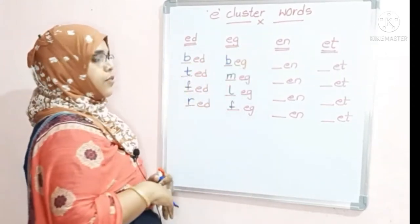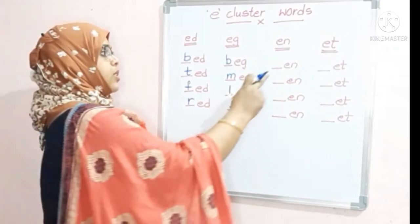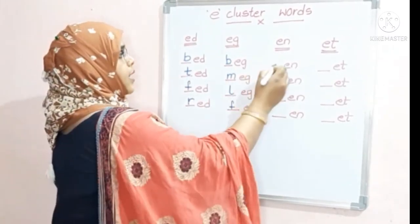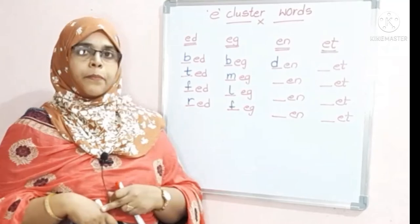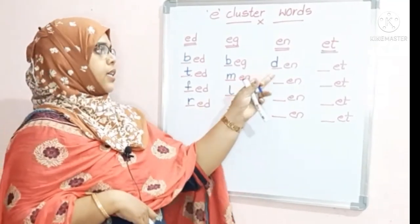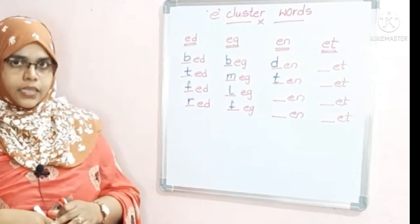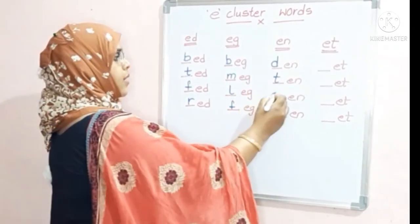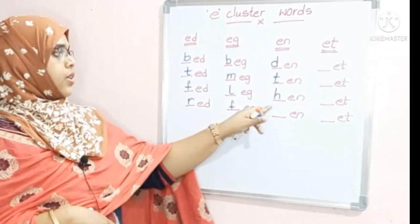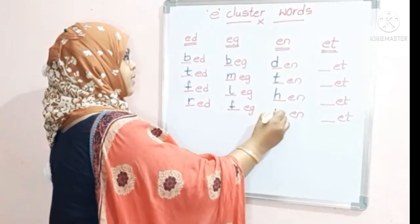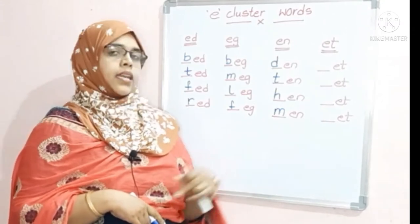The next cluster we have is E-N. To this E-N cluster, if you are adding letter D — the sound of D is D — D + N becomes 'den'. The sound of T is T — T + N becomes 'ten'. This is letter H, the sound of H is H — H + N becomes 'hen'. This is letter M, the sound of M is M — M + N becomes 'men'.